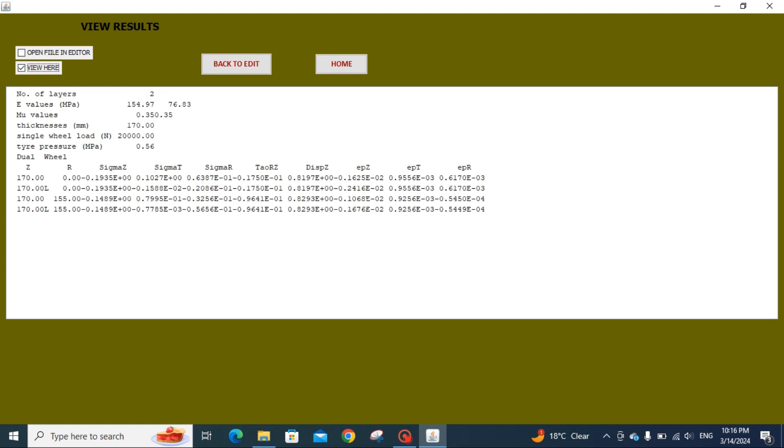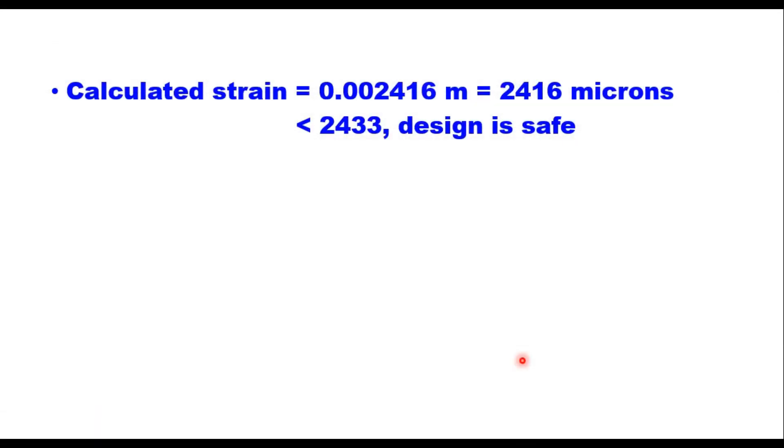Epsilon z is now 2416, 0.2416 into 10 to the power minus 2, that is 0.002416 meter. The vertical compressive strain at top of subgrade is now 0.002416, that is 2416 microns, which is less than 2433, and therefore design is safe. So that is how we check the adequacy of subbase layer to carry the construction traffic safely without straining subgrade beyond its limit.